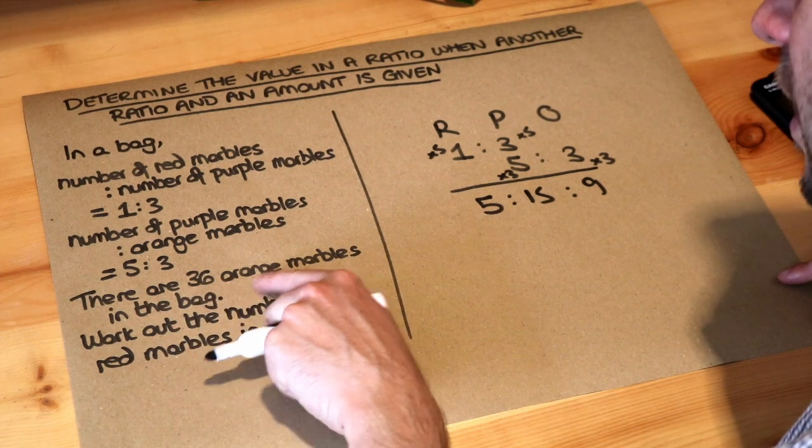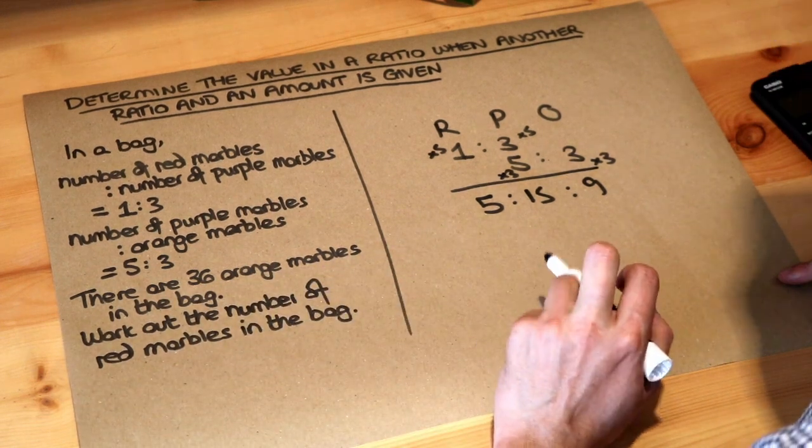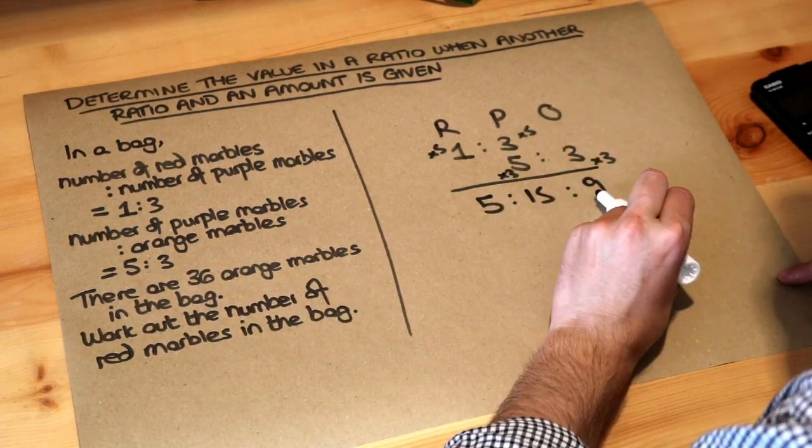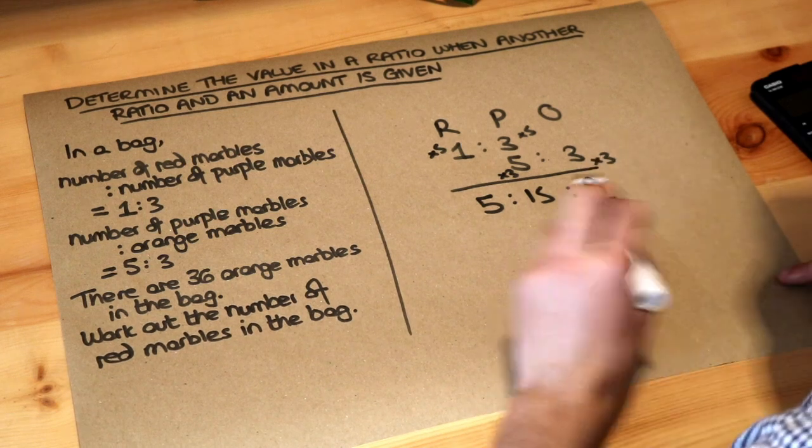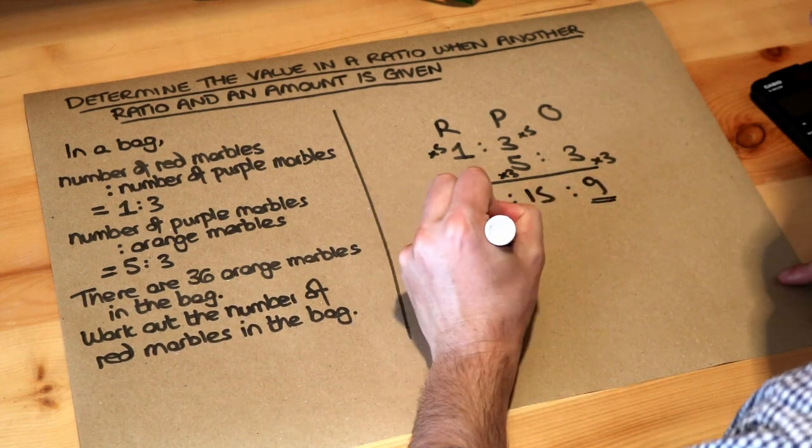Now we're told there are 36 orange marbles in the bag. Now the orange part of the ratio is this nine here so we know that the nine parts in the ratio represents 36 marbles.